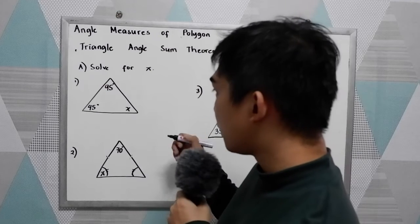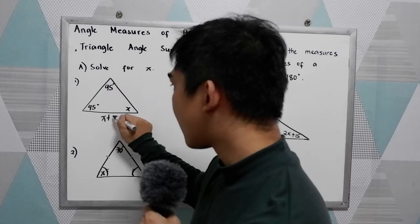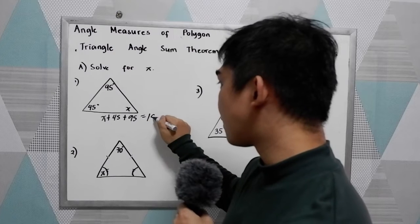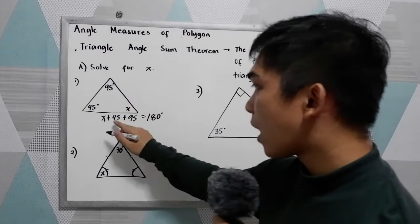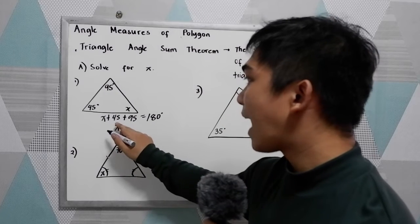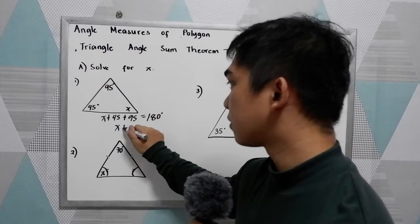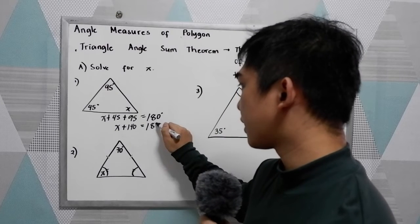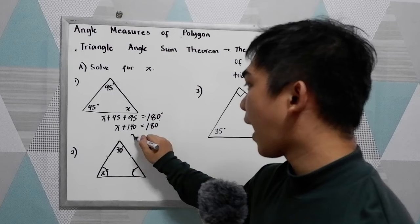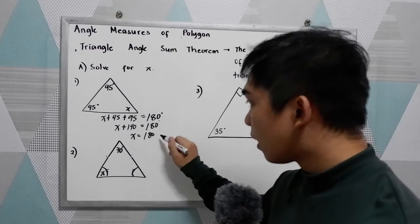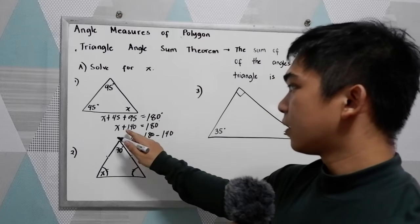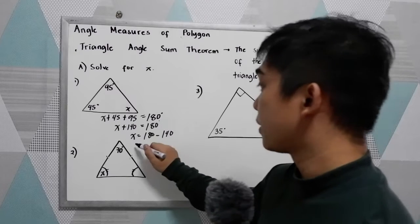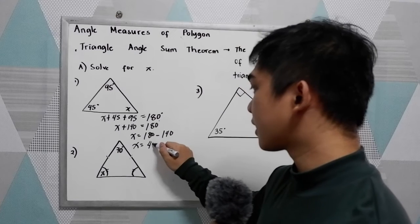We know that if we're going to add x plus 45 plus 95 that is equal to 180 degrees. Now, x add 45 and 95. 45 plus 95 that is 140 is equal to 180 degrees. Now we have x is equal to 180 minus 140. Move the positive 140 to the right side, that will become negative 140. So x is equal to 40 degrees.